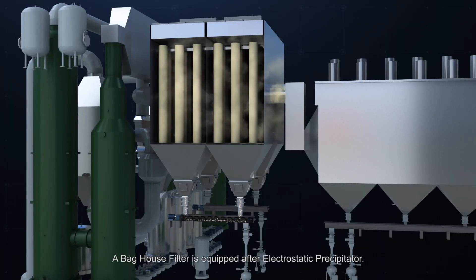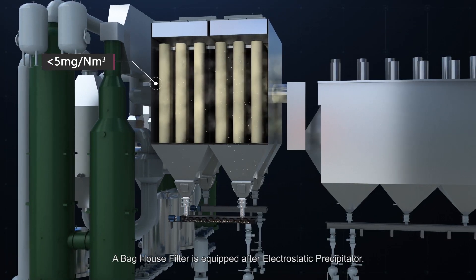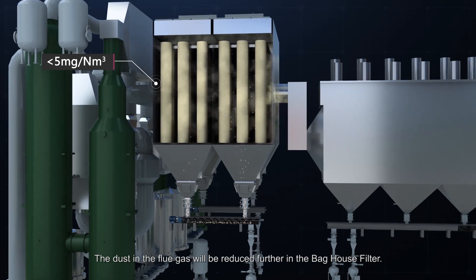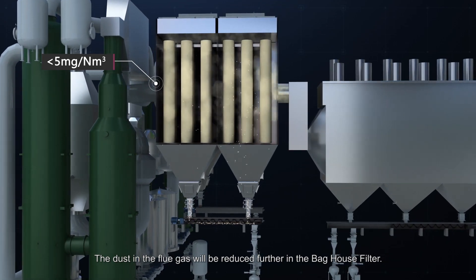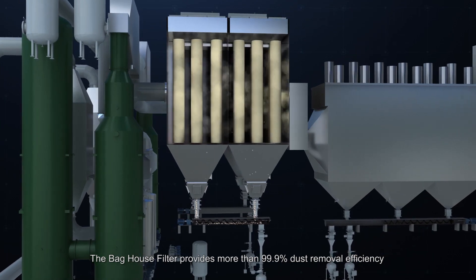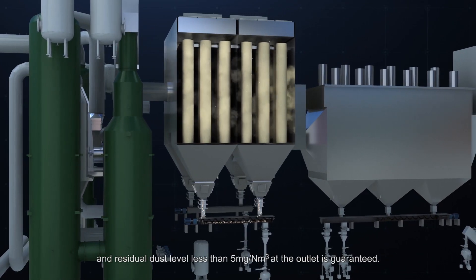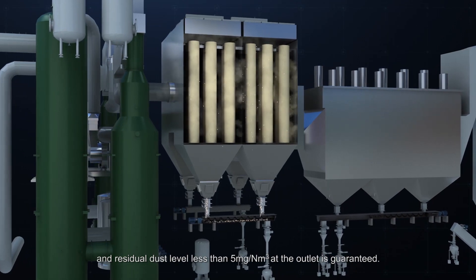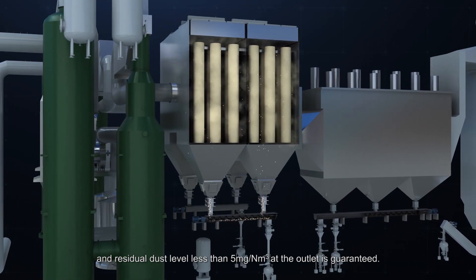A bag-house filter is equipped after electrostatic precipitator. The dust in the flue gas will be reduced further in the bag-house filter. The bag-house filter provides more than 99.9% dust removal efficiency and residual dust level less than 5 mg per normal cubic meter at the outlet is guaranteed.